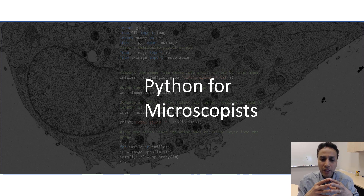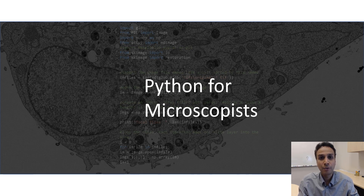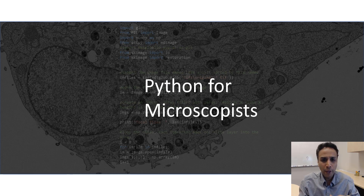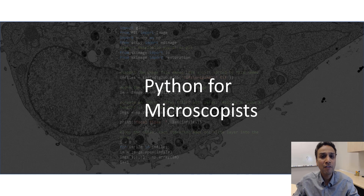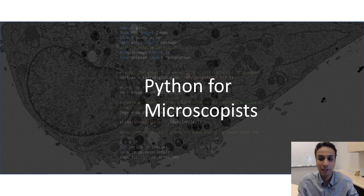If you watch the previous tutorials, you understand how to process images — to do some thresholding, to do segmentation, and we'll talk more about it. But when you generate this data, oftentimes it's easier to save your output as a CSV file so you can perform your analysis elsewhere, for example in Excel.